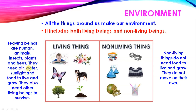Living things need air, water, sunlight, and food to live and grow. They also depend on other living beings to survive. For example, a non-vegetarian person depends on animals for flesh or meat.